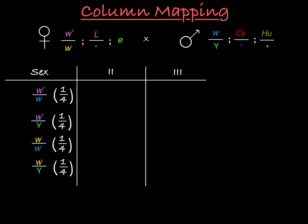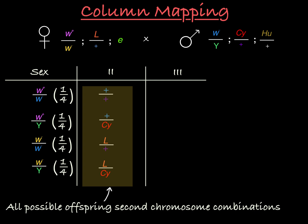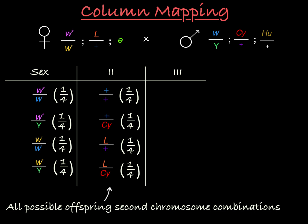Moving on to the second chromosome, we'll follow the same method. We compare the female wild type second chromosome with the male wild type second chromosome or the male curly second chromosome, and we compare the female lobe chromosome with the male wild type or the male curly chromosomes. Here we see all four possible second chromosome pairings in the offspring of this cross, and each of these options shows up one quarter of the time.